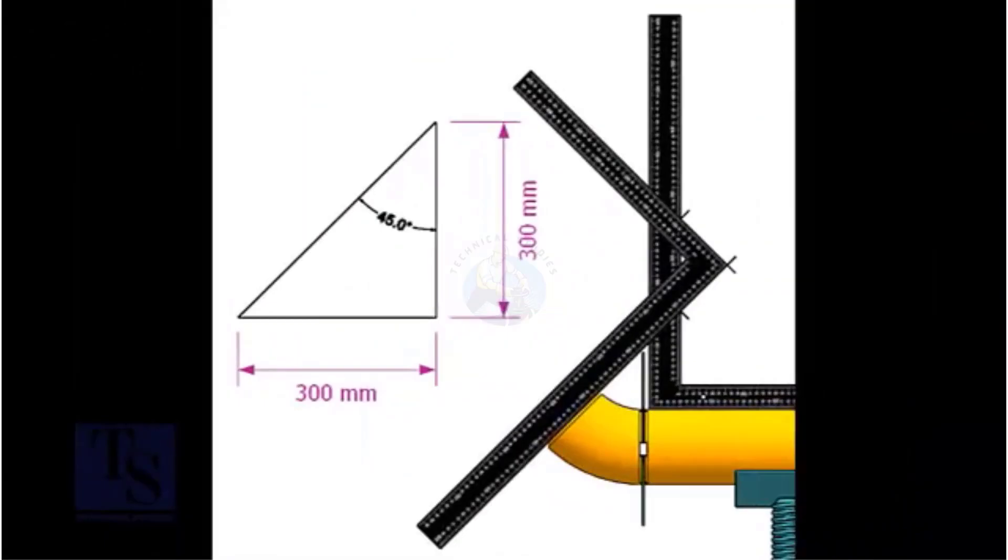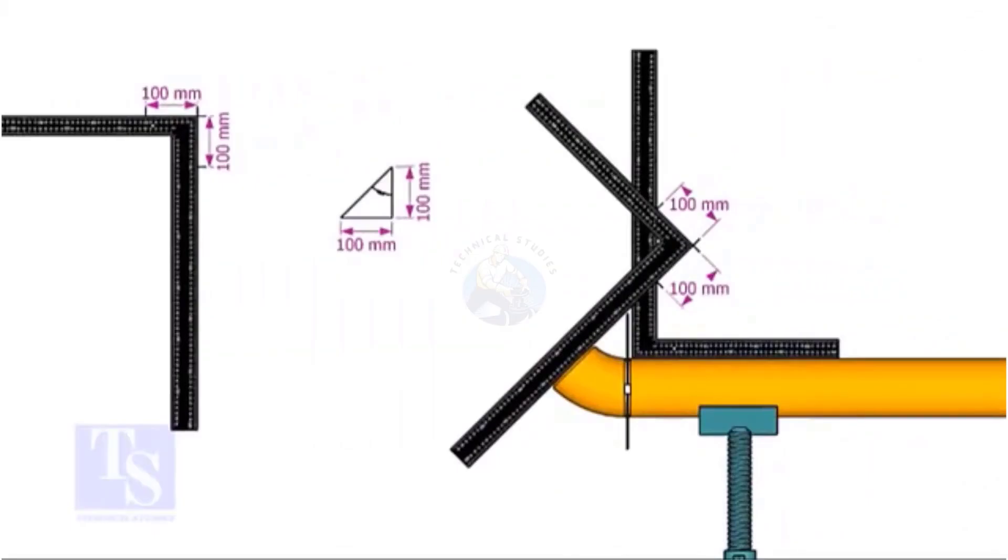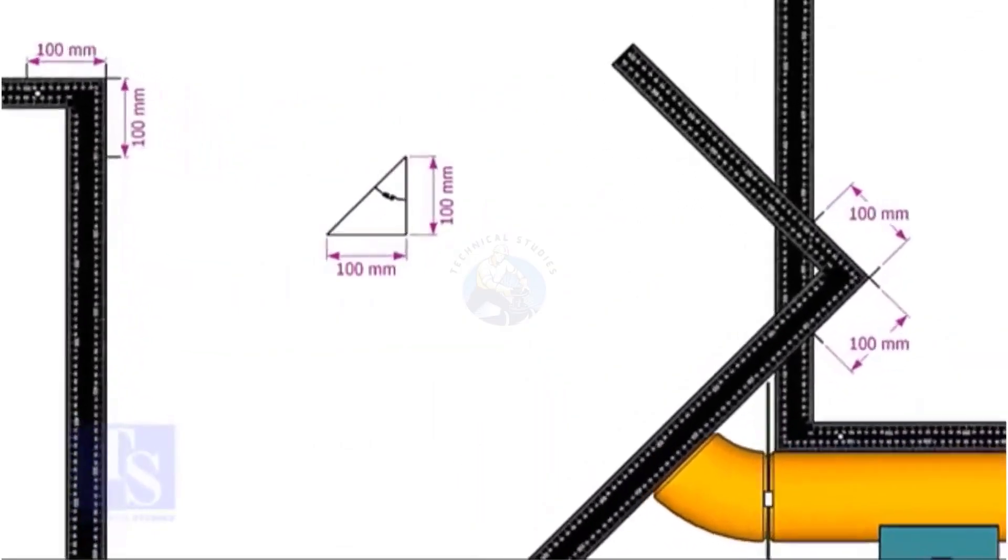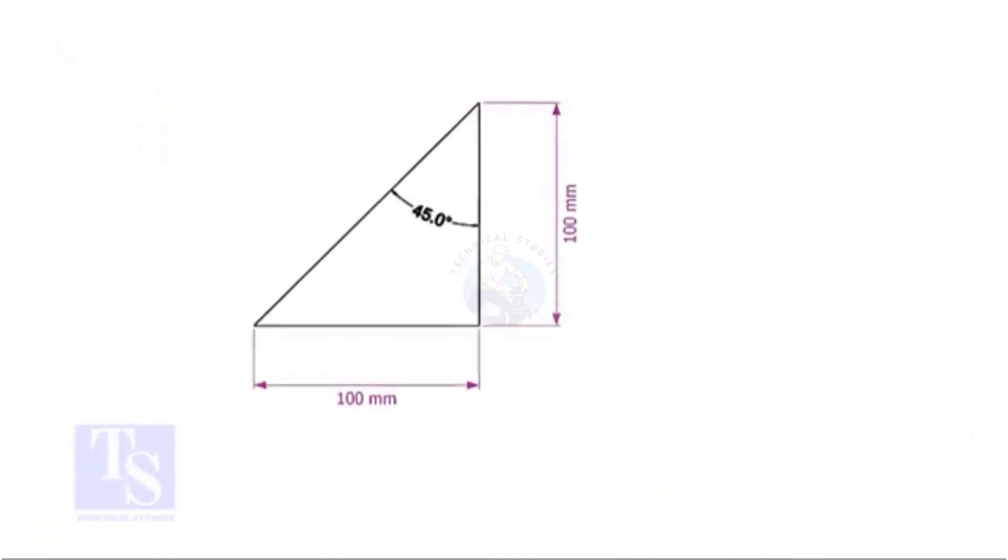For the 45 degree, the set and the run are the same. Mark any convenient distance on the right angle, as shown.